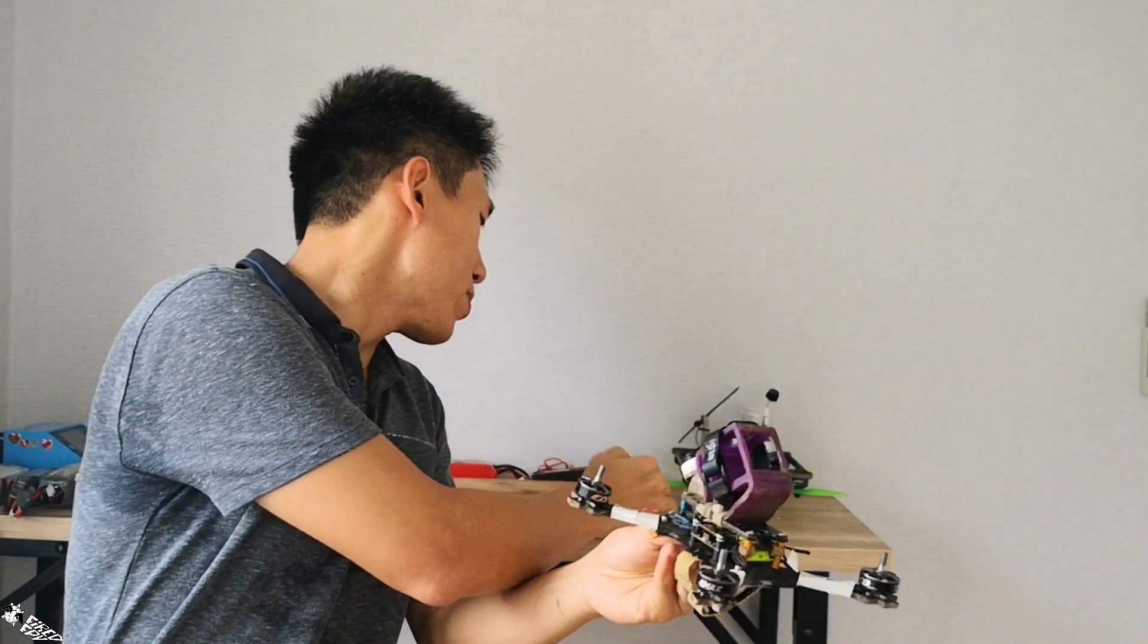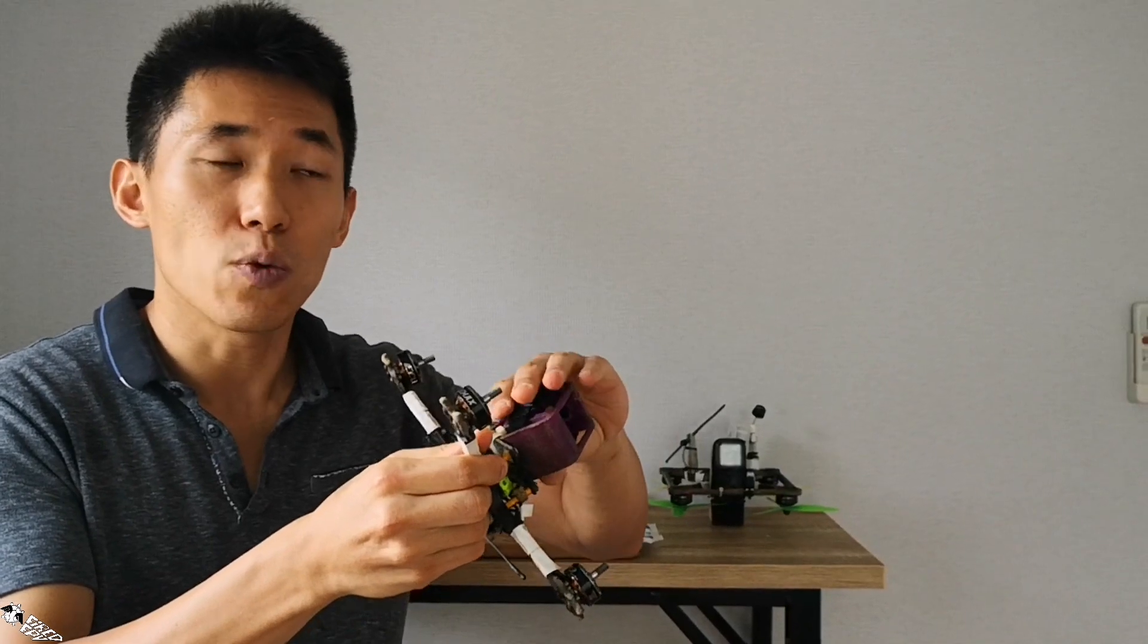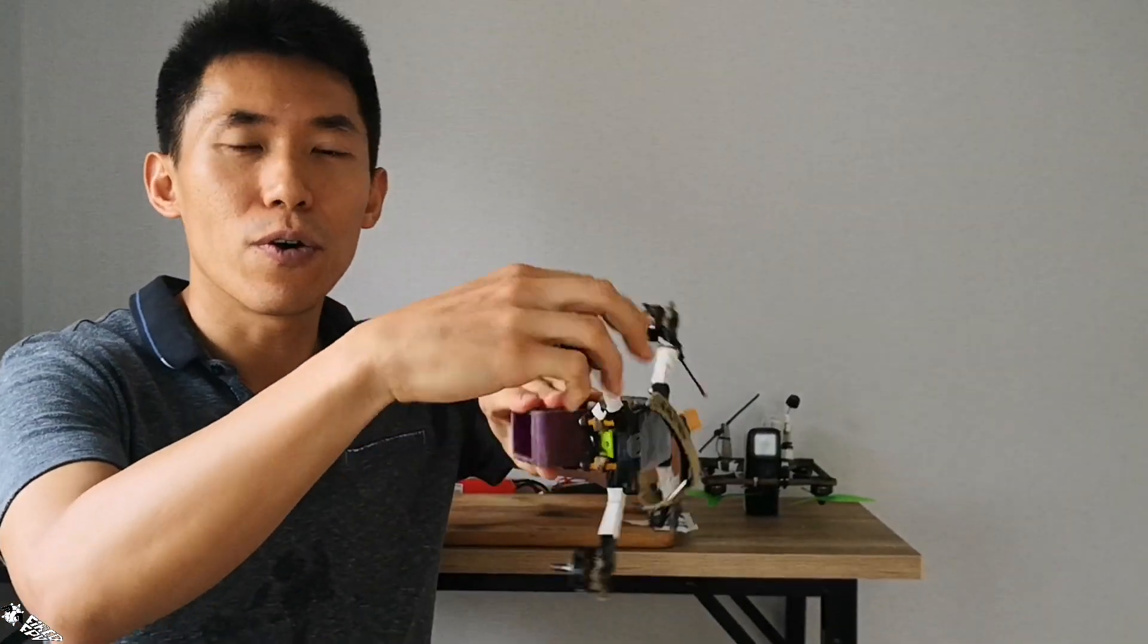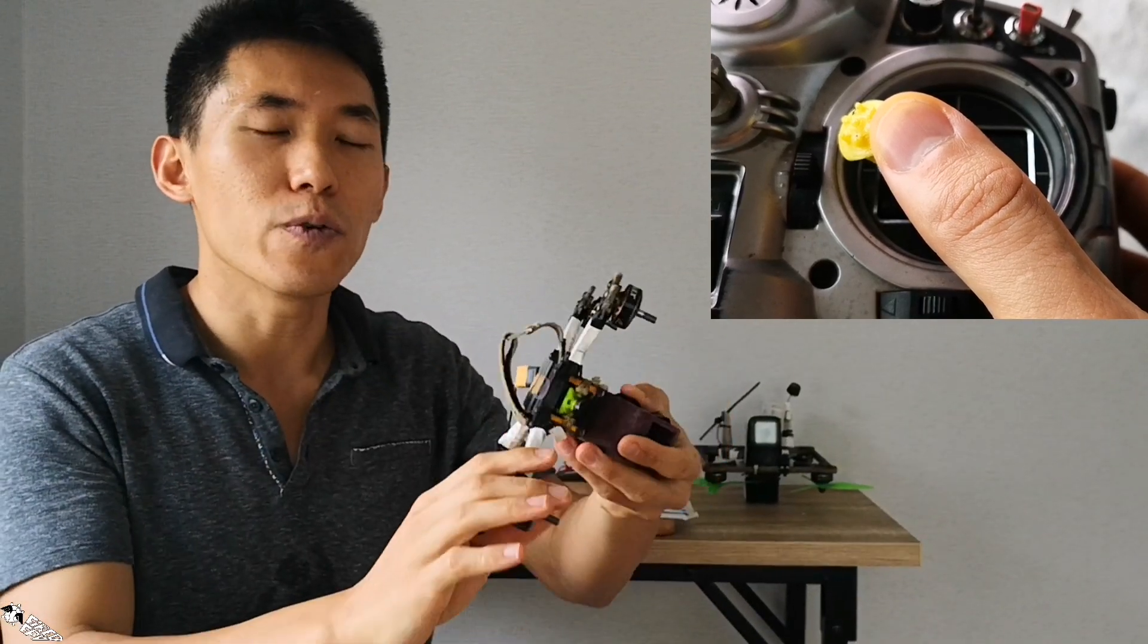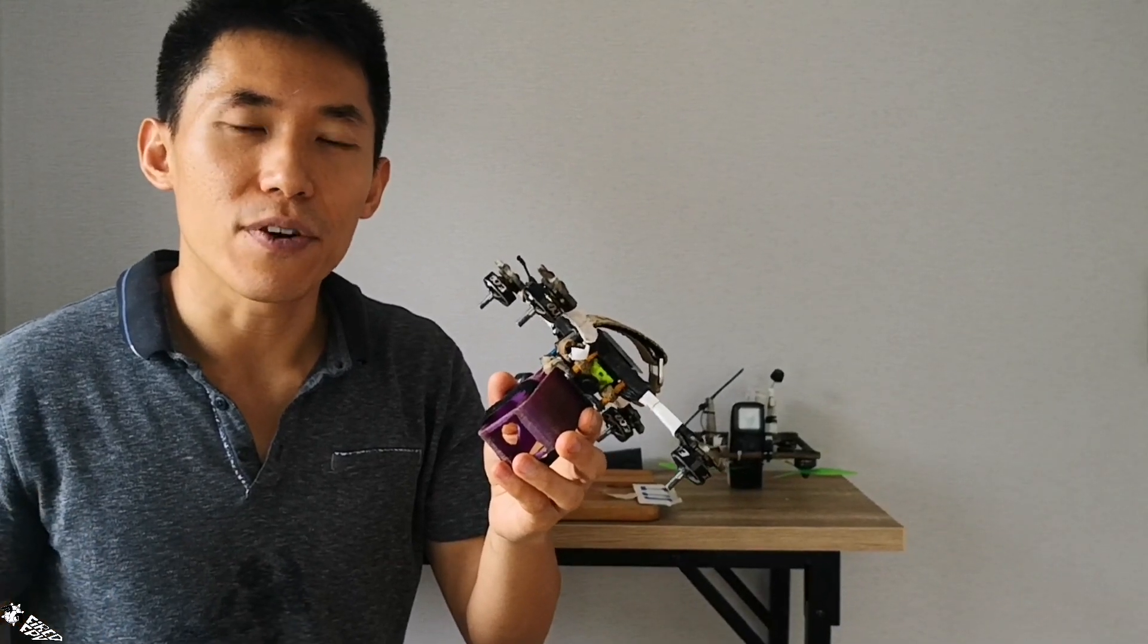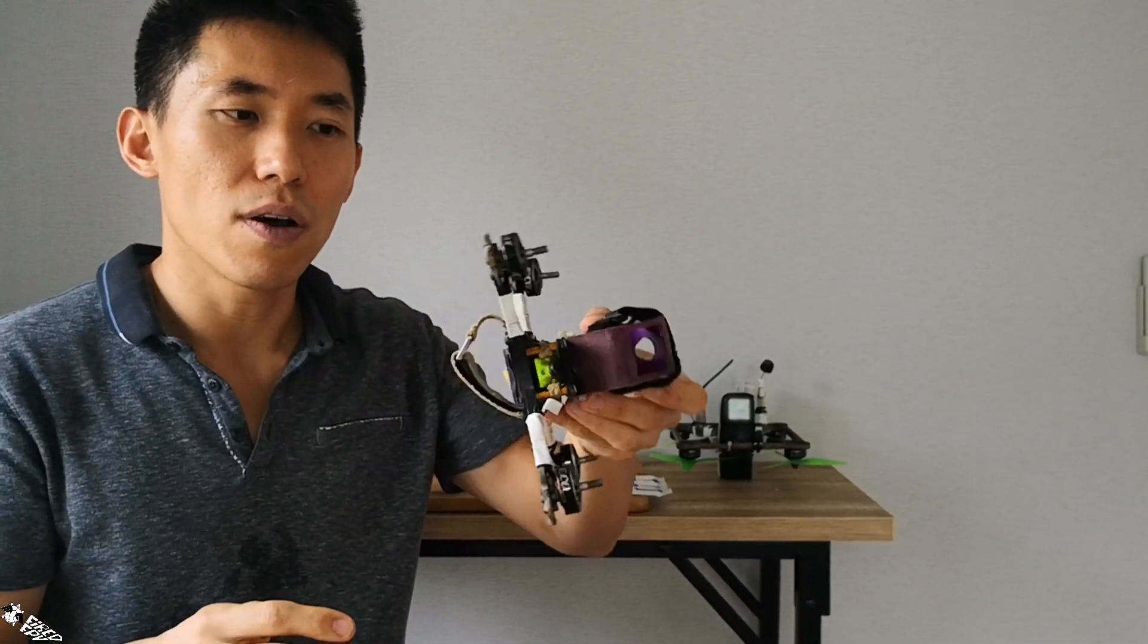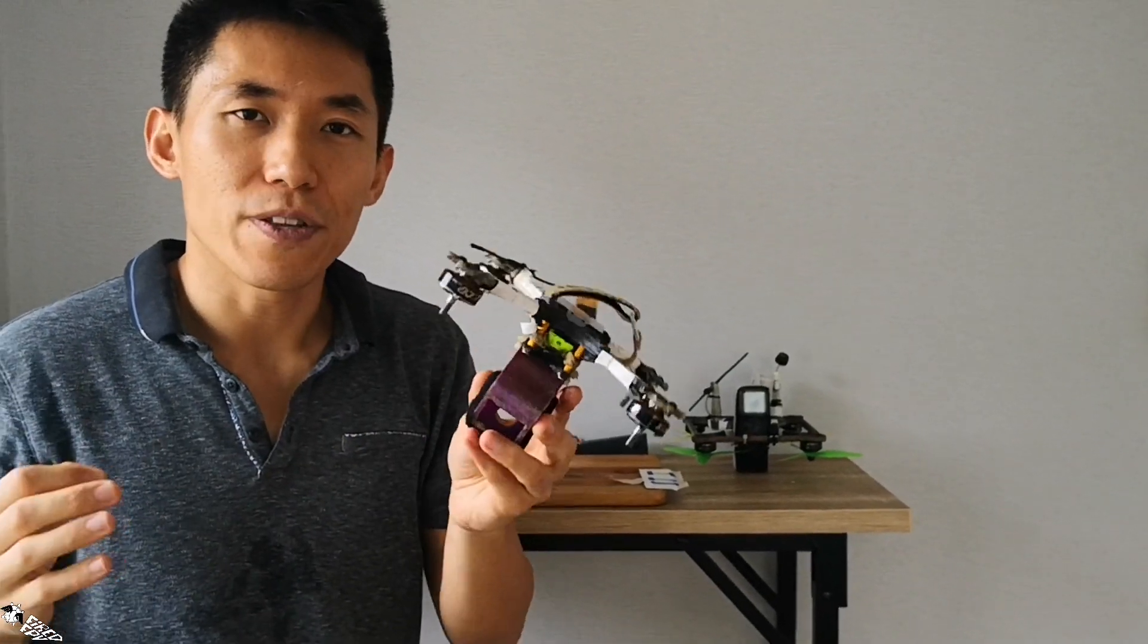But in Acro Mode, if you return the roll stick to center when it was rolling left or right as far as possible continuously, what happens to the Acro Mode drone is that it will stop rolling at any angle whenever the stick returns to center. So it may stop at this angle, may stop at this angle, this angle, or this angle.